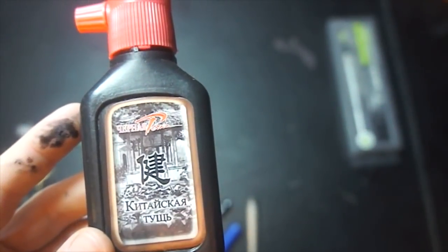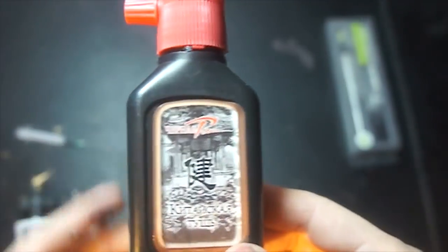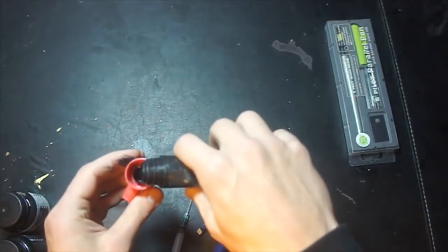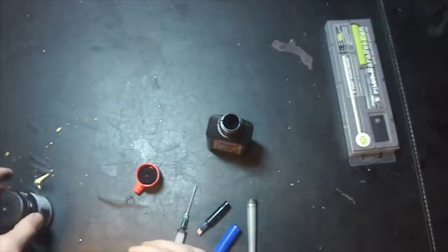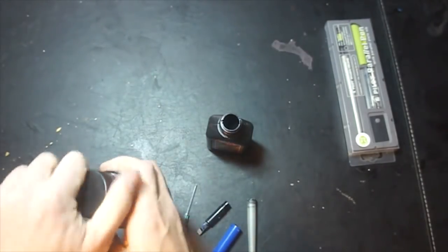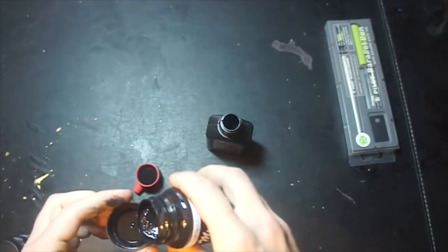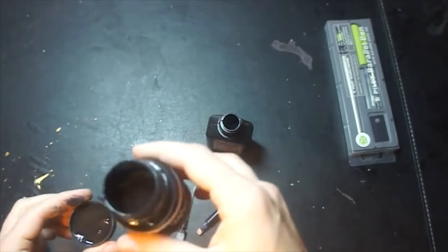Good option is Chinese inks for calligraphy. But they are a little bit dense, so you can add water to it. 9 inks to 1 water proportion, or less dispersive inks. On 5 Chinese inks, 5 less dispersive.